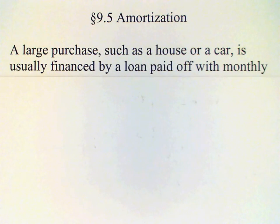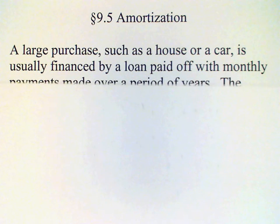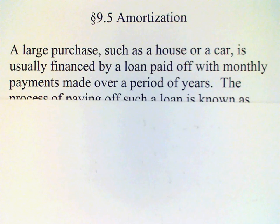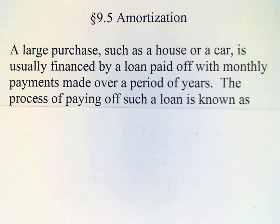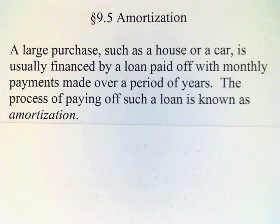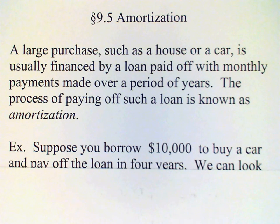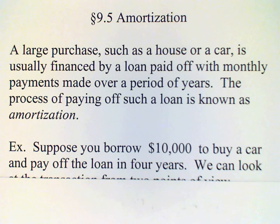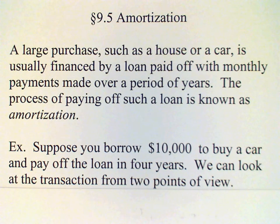A large purchase such as a house or a car is usually financed by a loan which is paid off with monthly installments over a number of years. The process of paying off a loan of this sort is called amortization. For example, suppose that you borrow ten thousand dollars to buy a car and you pay off the loan in four years.